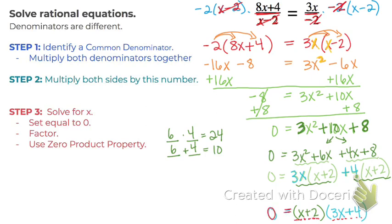then one of these has to be 0. So either (x plus 2) equals 0, or (3x plus 4) equals 0. And then you just solve these two equations. So we see that either x equals negative 2,